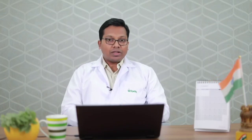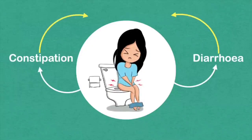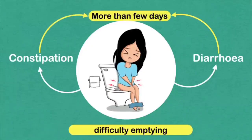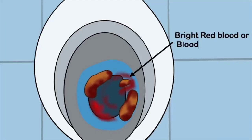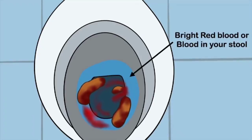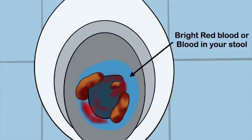The symptoms of colorectal cancer include altered bowel habits — such as increased frequency of motion or constipation — bleeding while passing stools, anemia (low hemoglobin), weight loss, and loss of appetite.